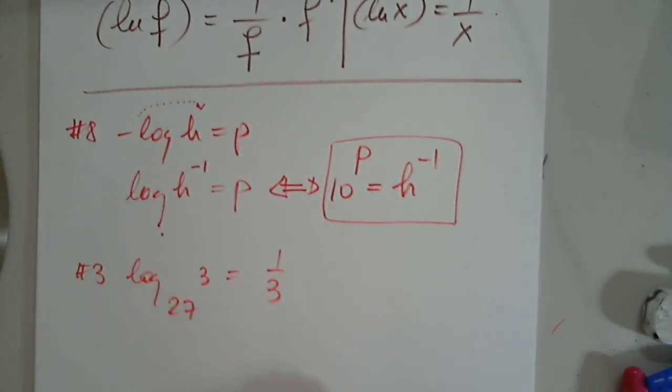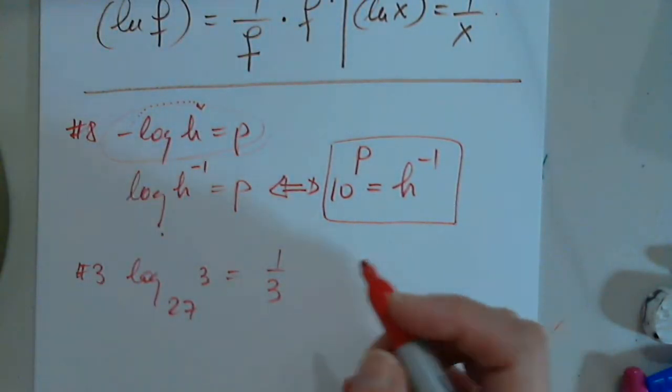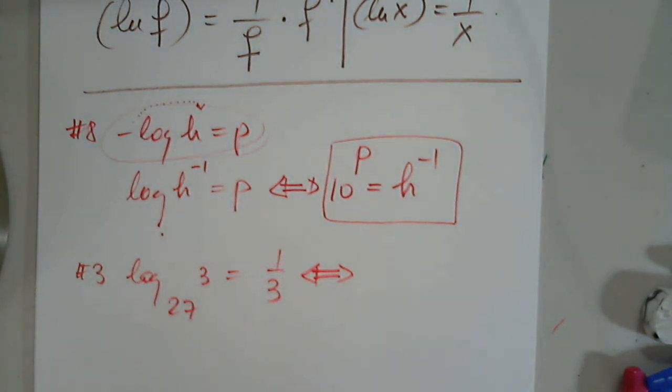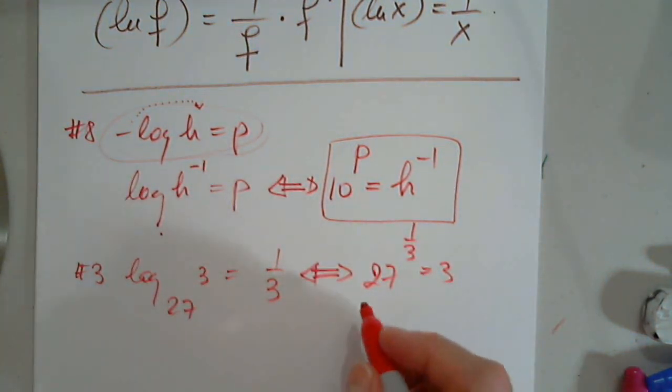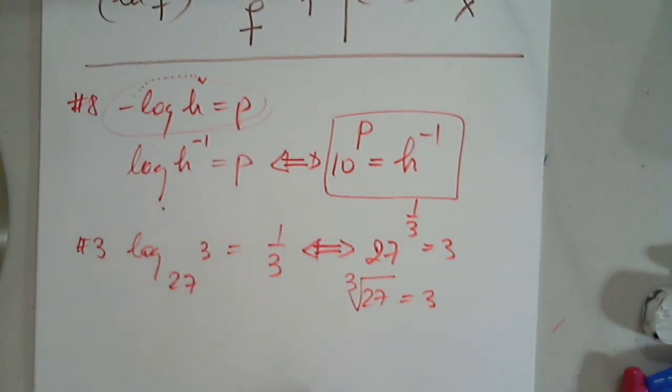Same thing. This is already prepared. This one needed some prep, but this one did not or does not. How do I write this? 27 to the 1/3 power equals 3. Good. Is it true? Of course. Because this is the cube root of 27, which is indeed 3.